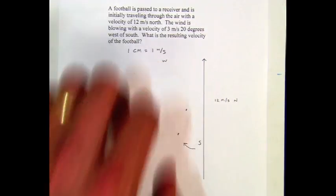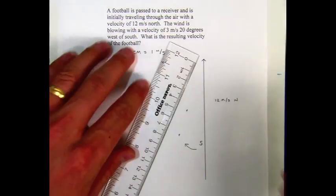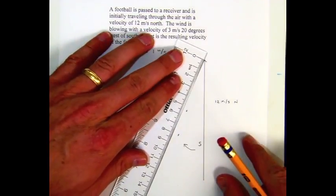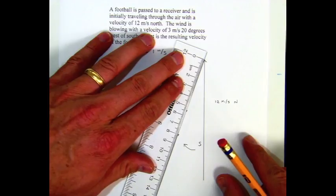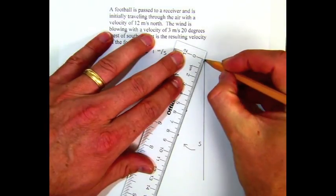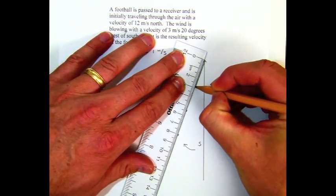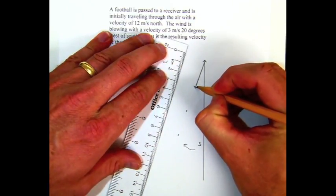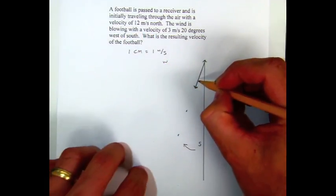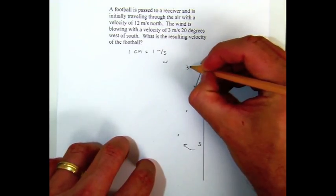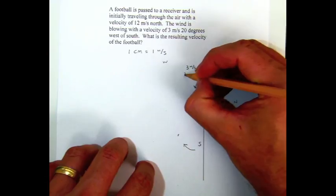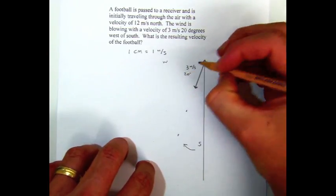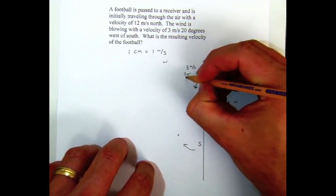So we're going to draw our vector head to tail as we always do. It's going to start at the tail of that vector and it's going to go towards that 20 degree mark. It's not going to make it all the way there because remember it's only three centimeters long. Those three centimeters represent that velocity of three meters per second. So that is three meters per second, 20 degrees west of north.